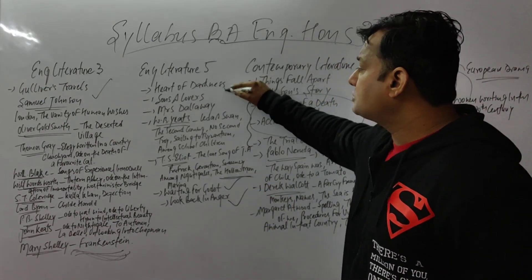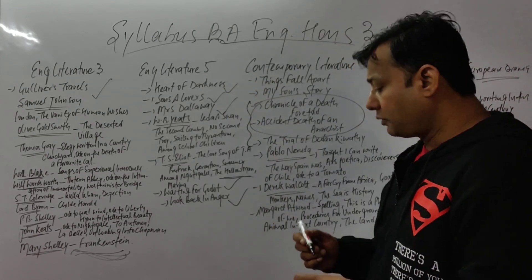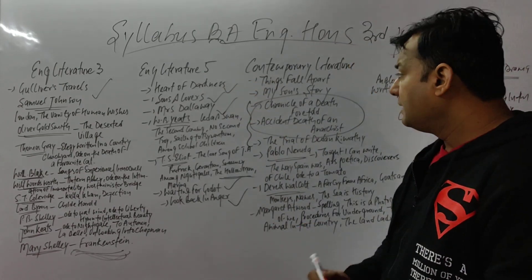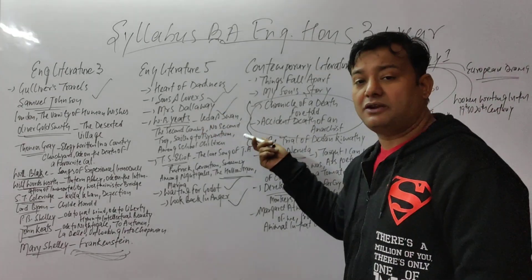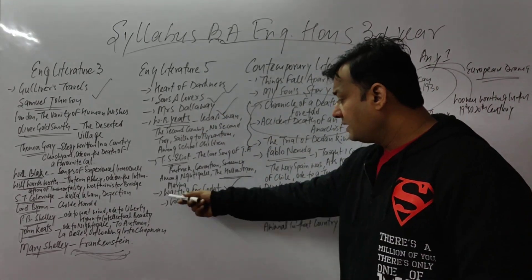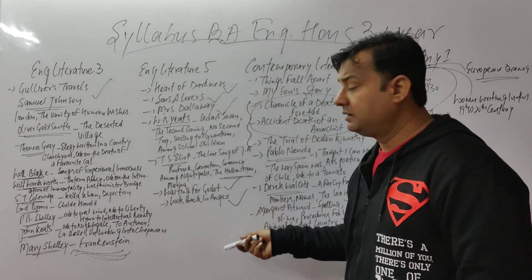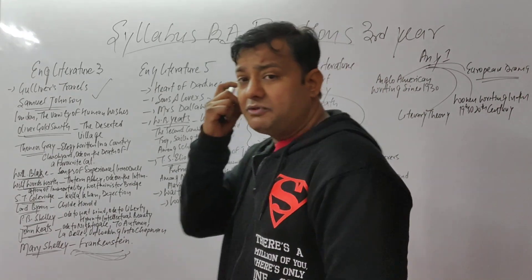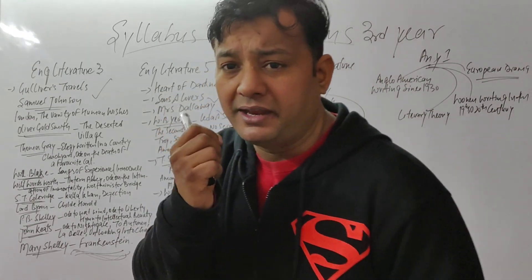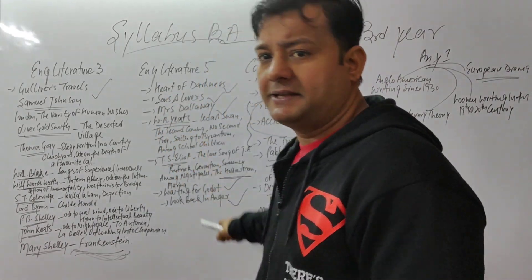So your five storylines to clear are: Heart of Darkness, Sons and Lovers, Mrs. Dalloway, Waiting for Godot, and Look Back in Anger. That covers the poetry section. Can we skip the poetry? Can we skip any one of these? Watch other videos — we will definitely do these papers.